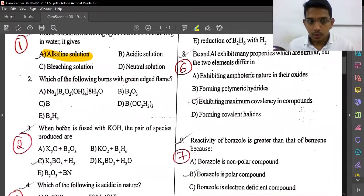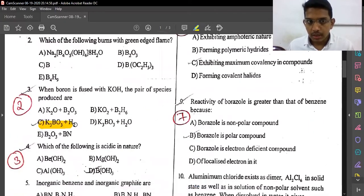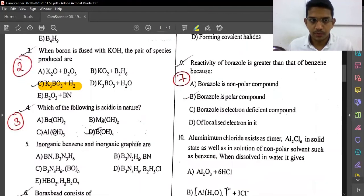Second question: When boron is fused with KOH, the pair of species produced are boron plus KOH gives K₃BO₃ plus hydrogen. The answer is K₃BO₃. Next question about sodium peroxide and potassium peroxide.